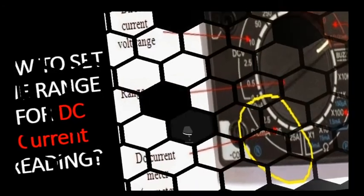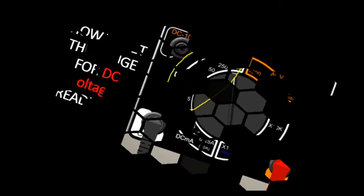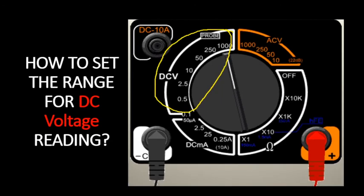In the yellow circle also is the range used when testing battery. The range used must be higher than the voltage to be tested. Example, you are going to test a 12V battery. The range will be 50, and the scale to be used is zero to 50 in the voltmeter scale.